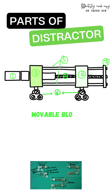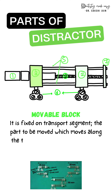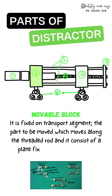The movable block is the one which can move. It is fixed on the transport segment — the part which can be moved. It moves along with the central threaded rod, and it consists of a plate which is fixed to the distal fragment.